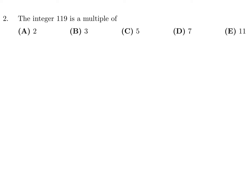Question number 2. The integer 119 is a multiple of. It's not a multiple of 2 because only even numbers are multiples of 2. It's not a multiple of 5 because multiples of 5 end in either 0 or 5, so you can immediately eliminate those. It's not divisible by 3, but it is divisible by 7 because 119 equals 7 times 17. The answer is D.